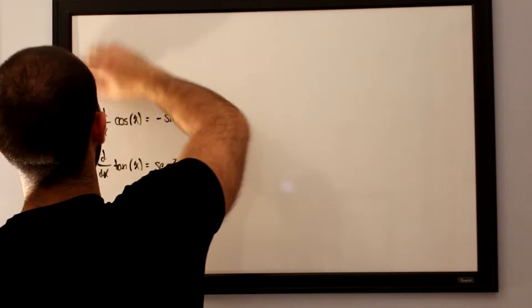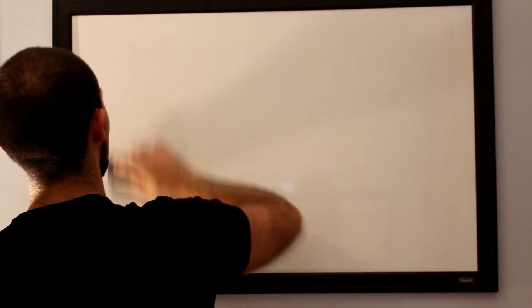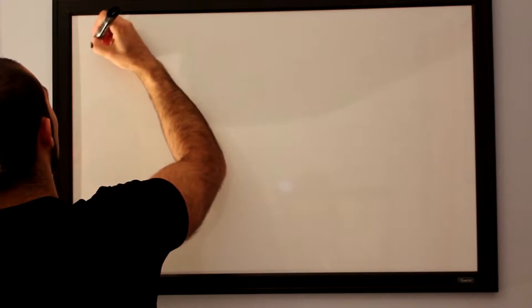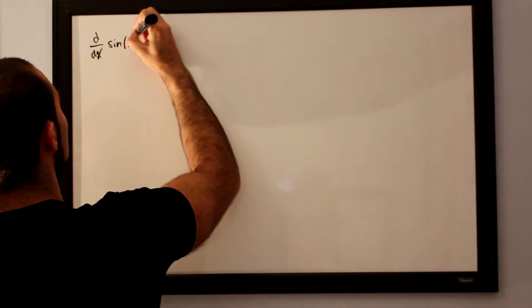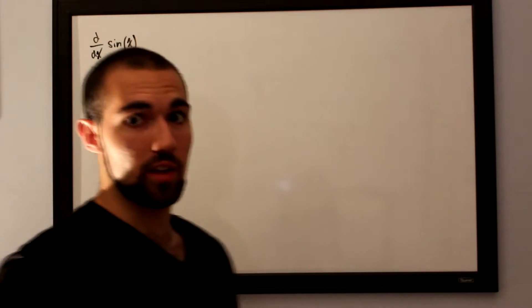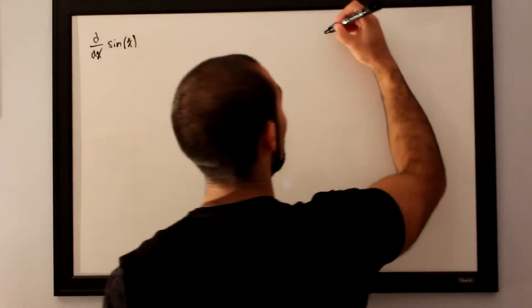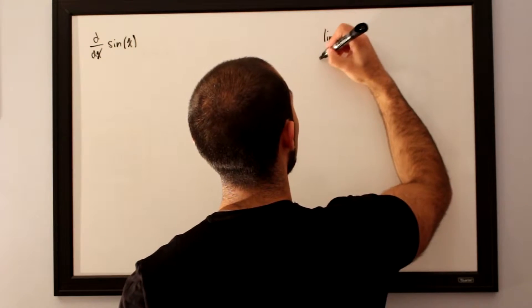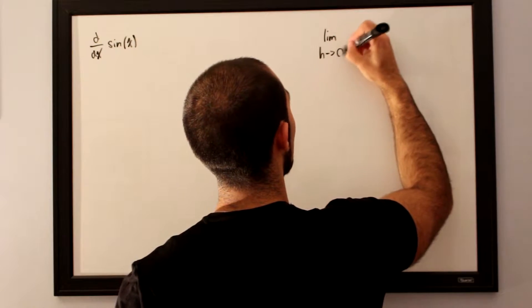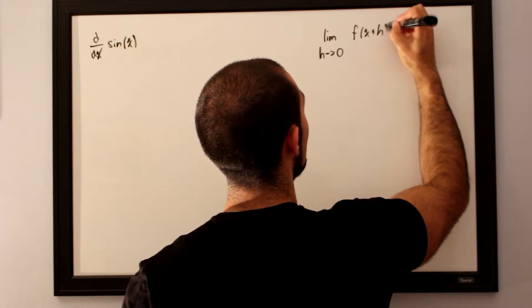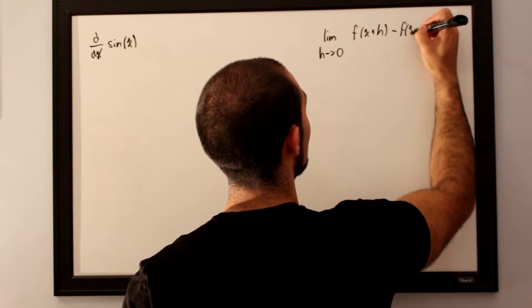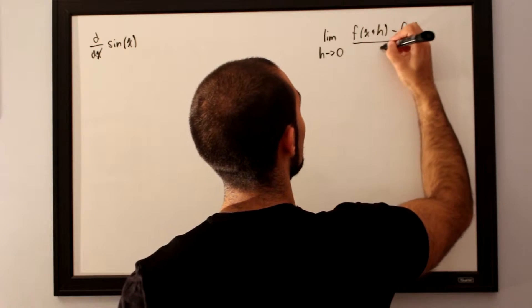We want to evaluate the derivative of sine of x using the limit definition of the derivative. So we want to evaluate d/dx of sine of x using the limit definition, which is the limit as h approaches 0 of f(x+h) minus f(x), divided by h.